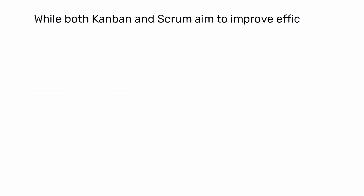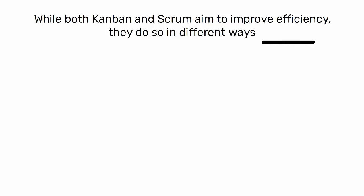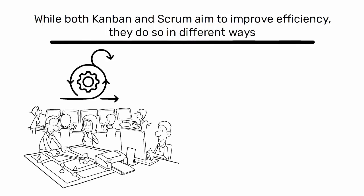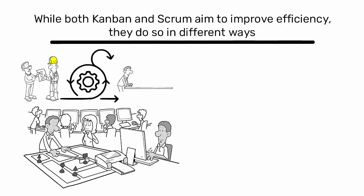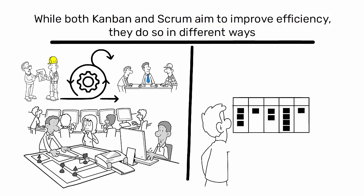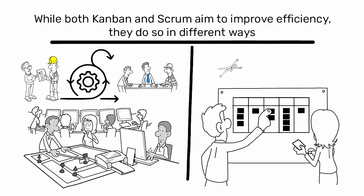In summary, while both Kanban and Scrum aim to improve efficiency, they do so in different ways. Scrum is more structured and works well for complex projects with clear stages, while Kanban is more flexible and works well for ongoing tasks with variable demand.